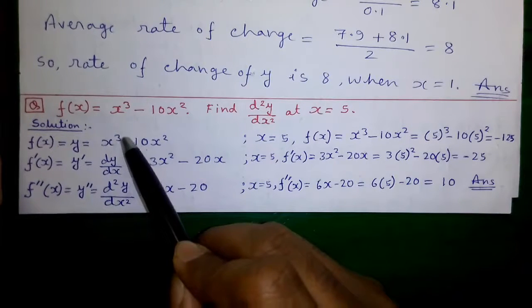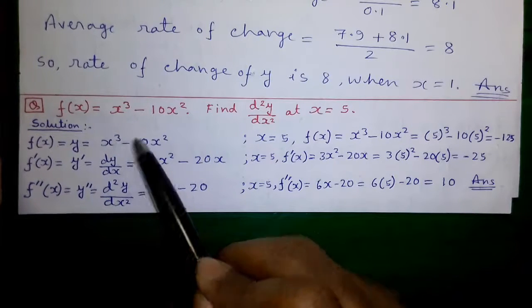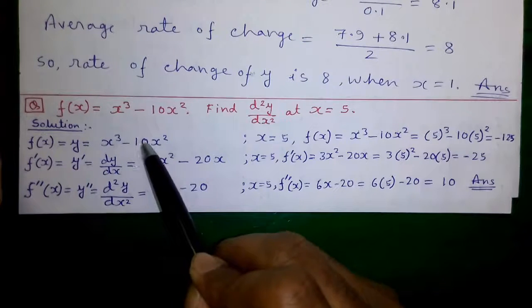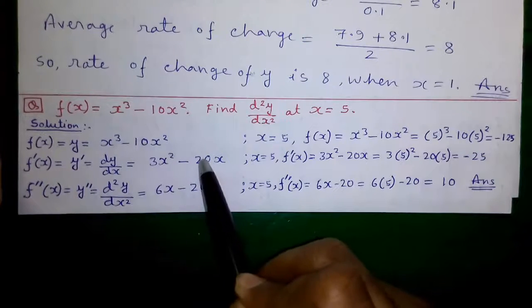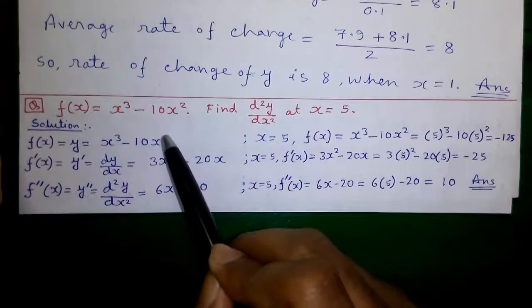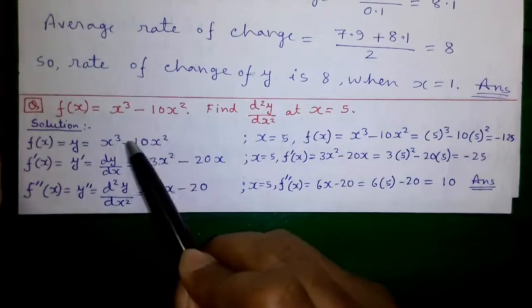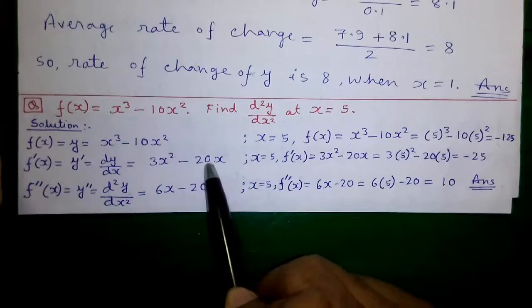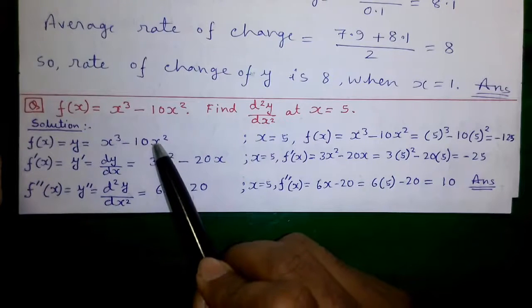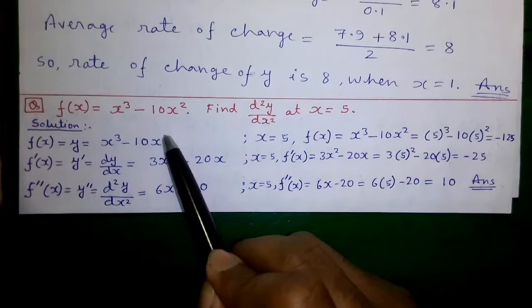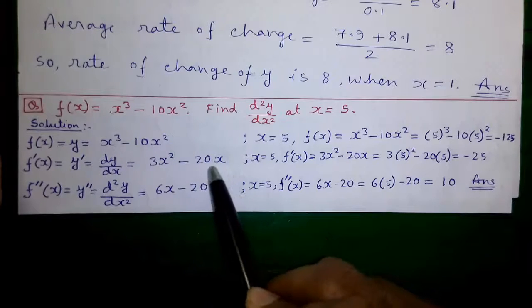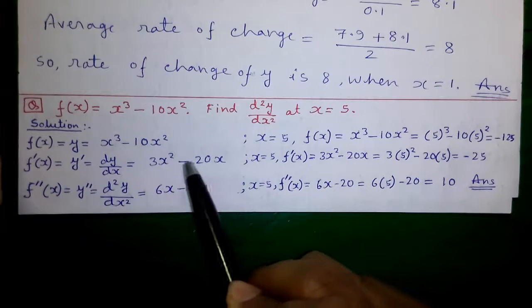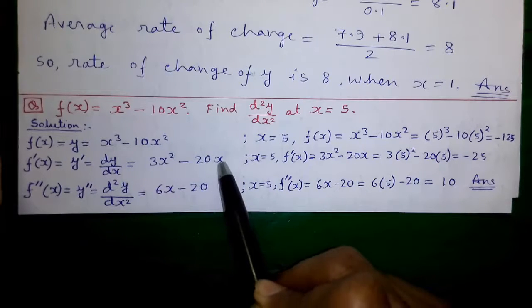So x to the power 3 minus 1 is x², and the 10 remains the same. Again, x to the power 2 comes forward, so 2 times 10 is 20, and x to the power 2 minus 1 is x to the power 1, or just x. So it becomes minus 20x.